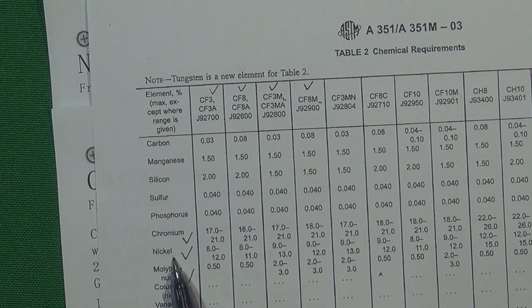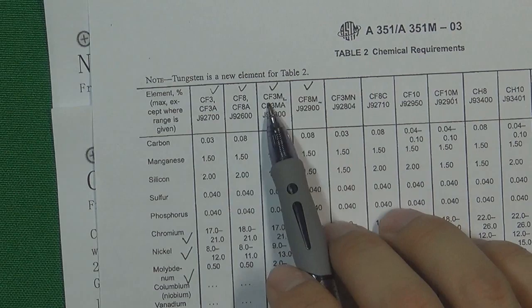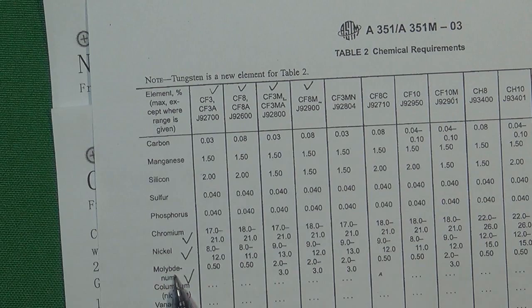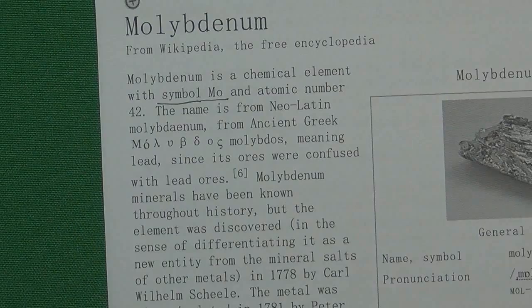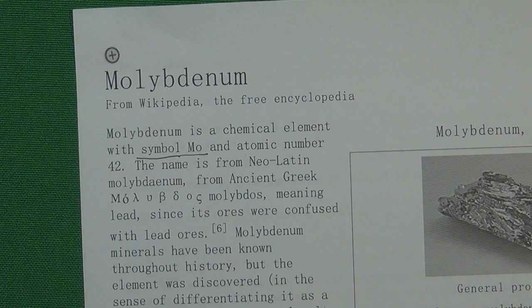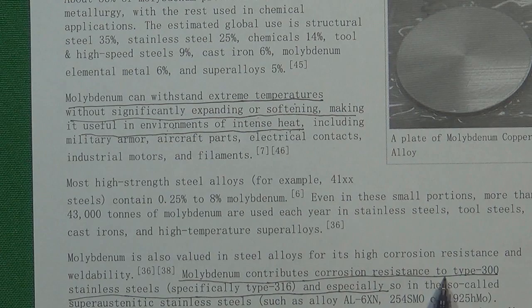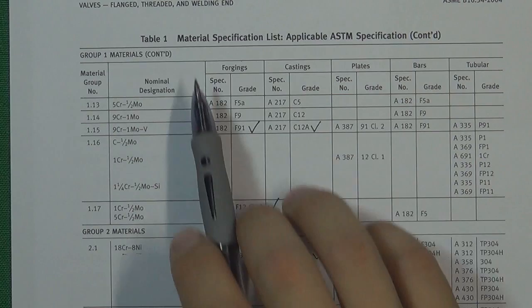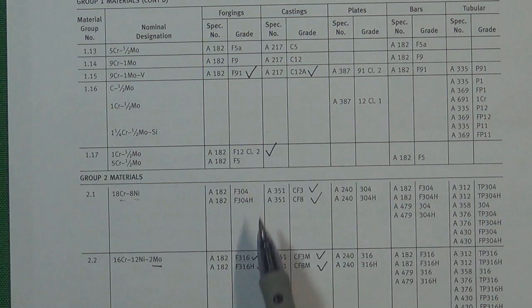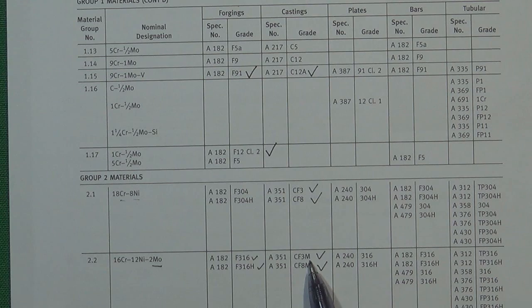Besides CF3 and CF8, we also have CF3M and CF8M — the 'M' in the code means molybdenum (Mo), so these grades contain molybdenum inside. Before, we already talked about this chemical element in high temperature steel, where it prevents the steel from getting soft at high temperature. But in stainless steel, the function is different. According to the description here, molybdenum contributes corrosion resistance to Type 300 stainless steels, especially Type 316.